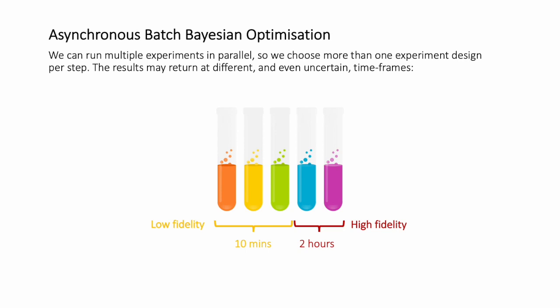Asynchronous batch-based optimization refers to the setting where we can run multiple experiments in parallel, so we end up choosing more than one experiment design per time-step. However, the results may return at different and even uncertain time-frames because of the nature of low and high fidelity — low fidelity experiments may be very quick while high fidelity experiments may take much longer.